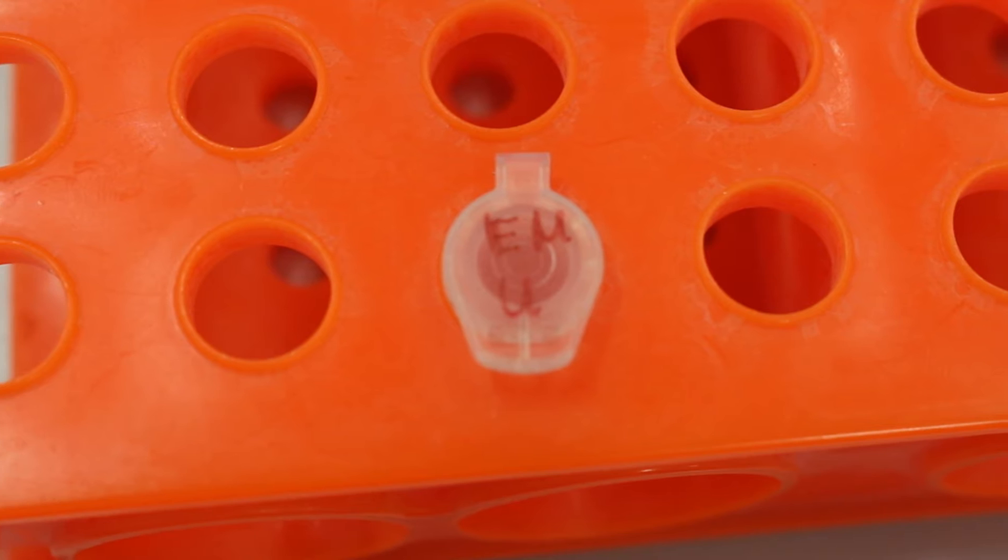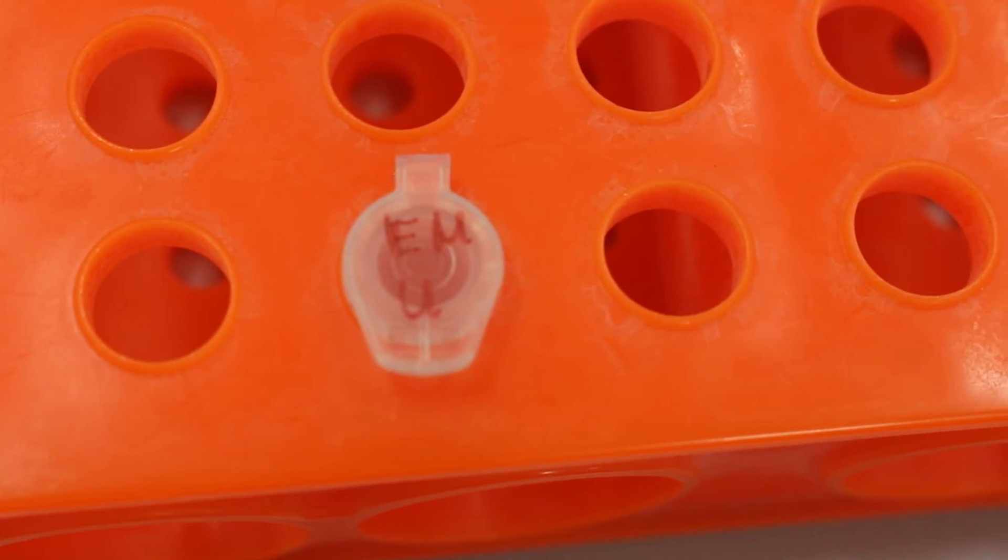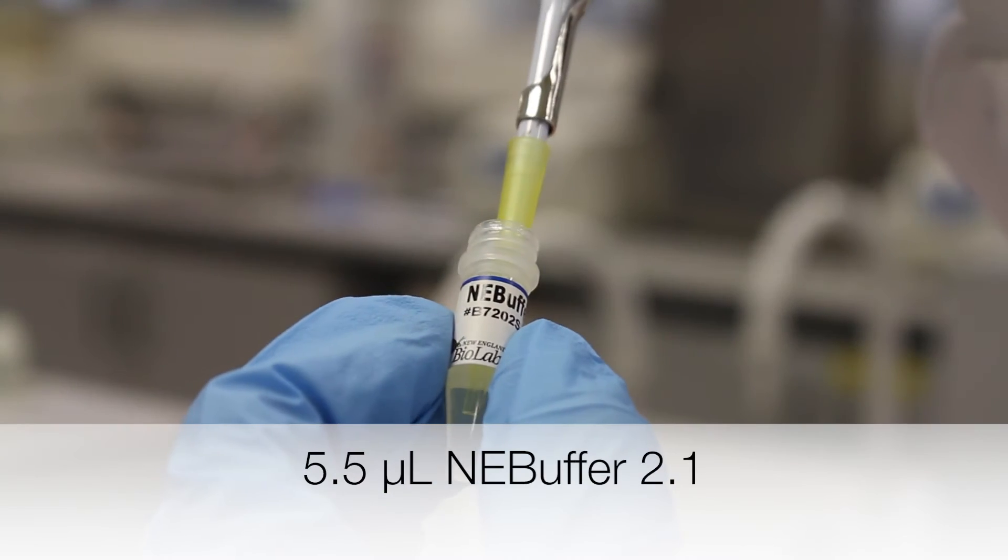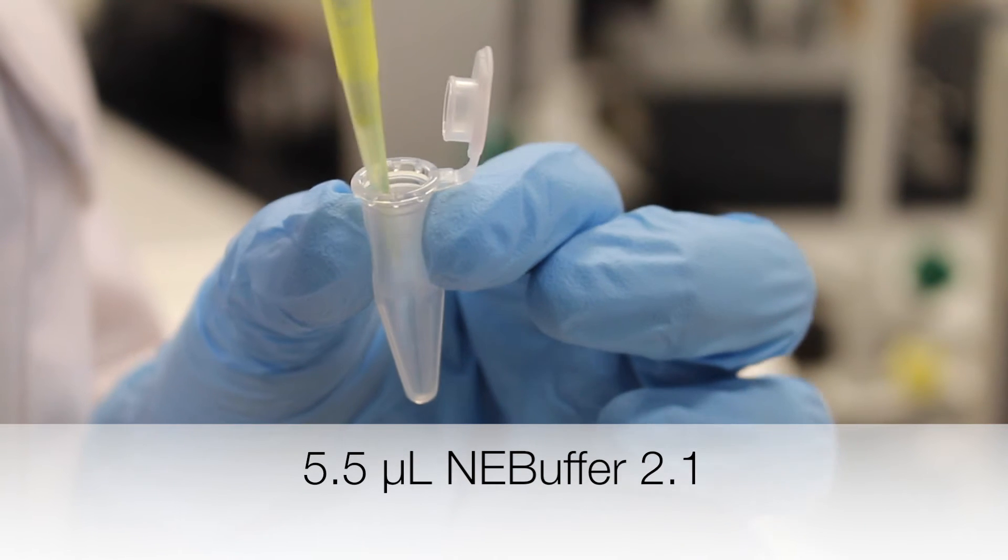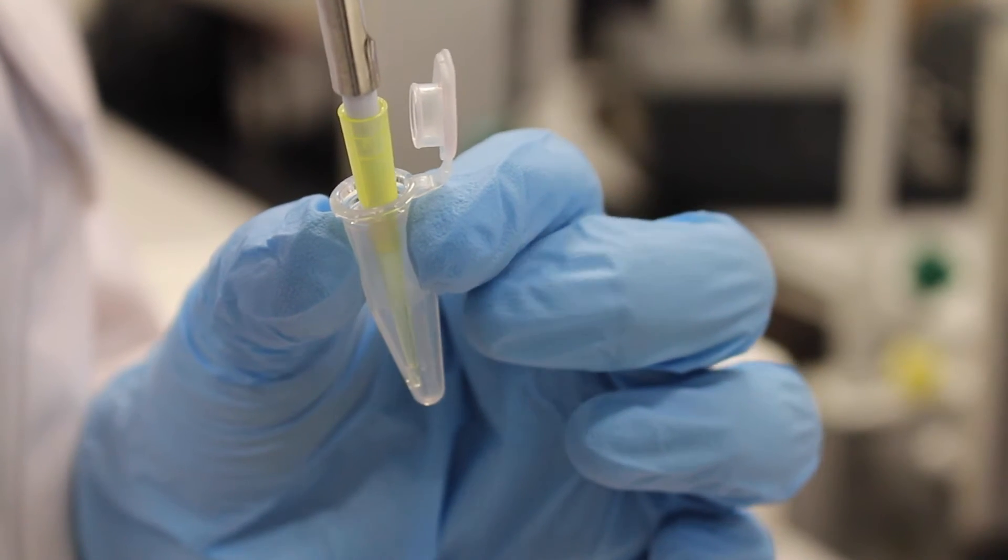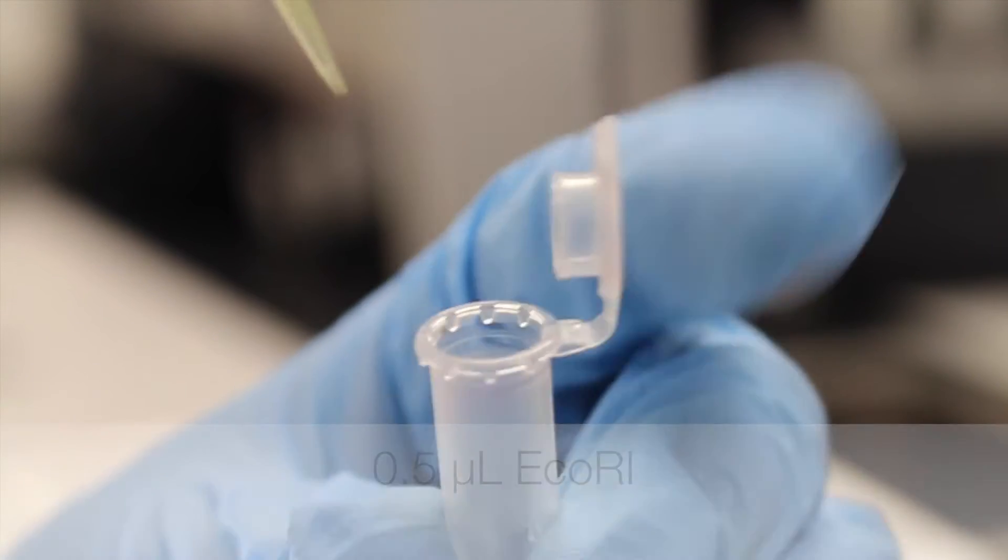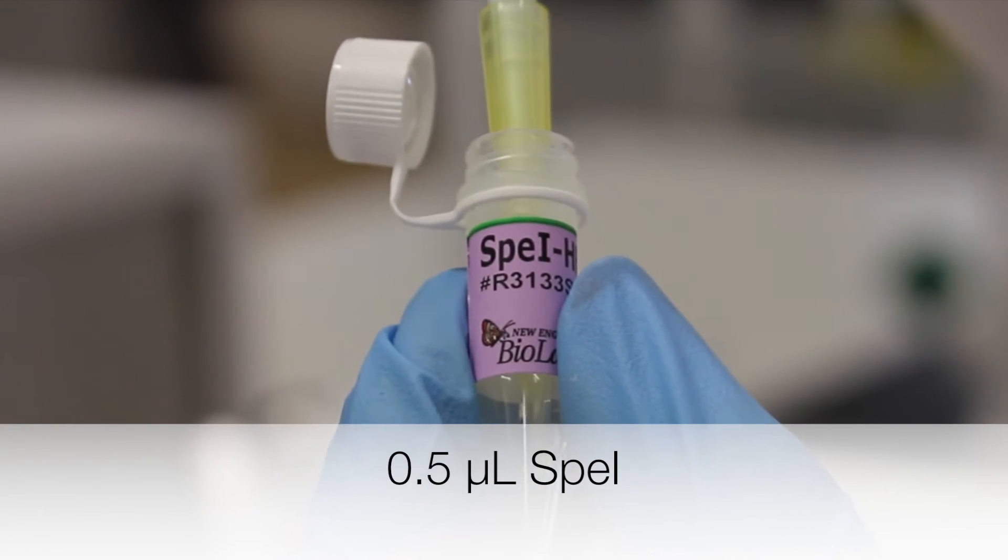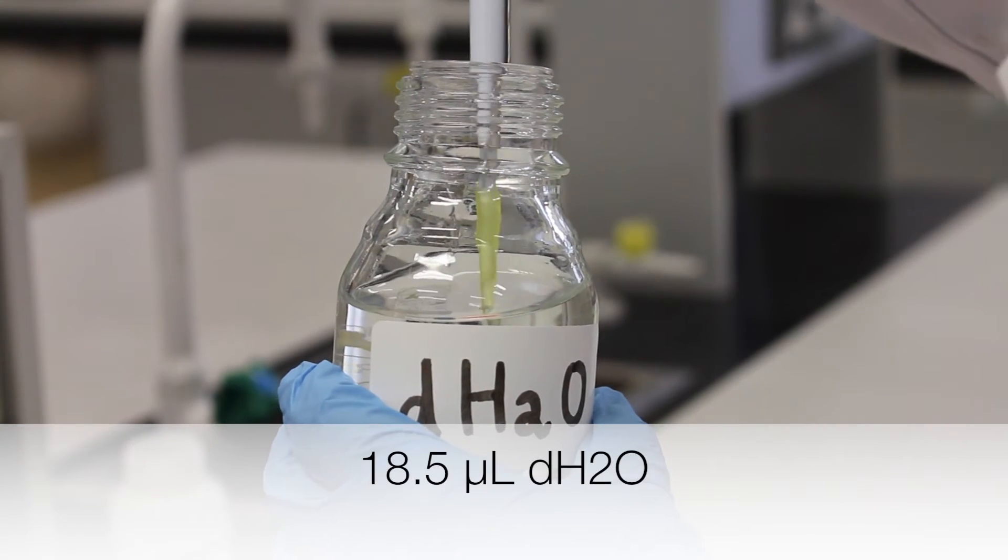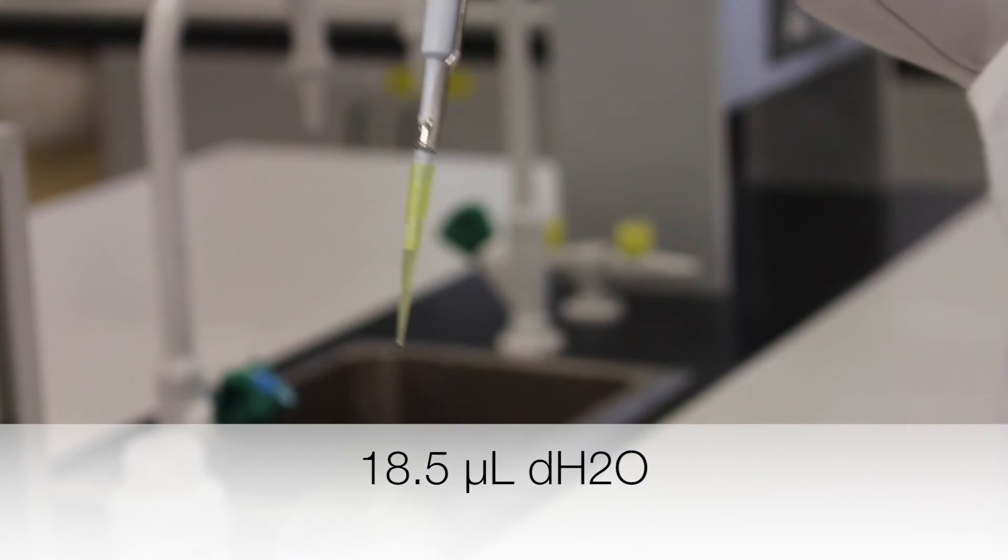The enzyme master mix for the upstream part will contain the following: 5.5 microliters of NEB buffer 2.1, 0.5 microliters of EcoR1, 0.5 microliters of SpeI, and 18.5 microliters of distilled water.